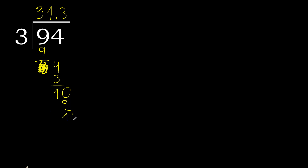Subtract. Complete — bring down 0 again. The decimal point is here. We have 10 again. 3 multiplied by 3 is 9.